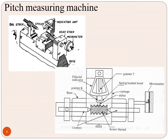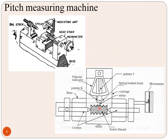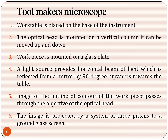This is the pitch measuring machine. For threads, similarly we have this for gears also. This part is a stylus; this is a pointer; this is a cartridge carriage with a spring-loaded head. This is called the dial indicator, and this is a micrometer. By means of the stylus, we are measuring the reading — the pointer will deflect. This is the gear pitch measuring machine. Another one is the tool makers microscope.